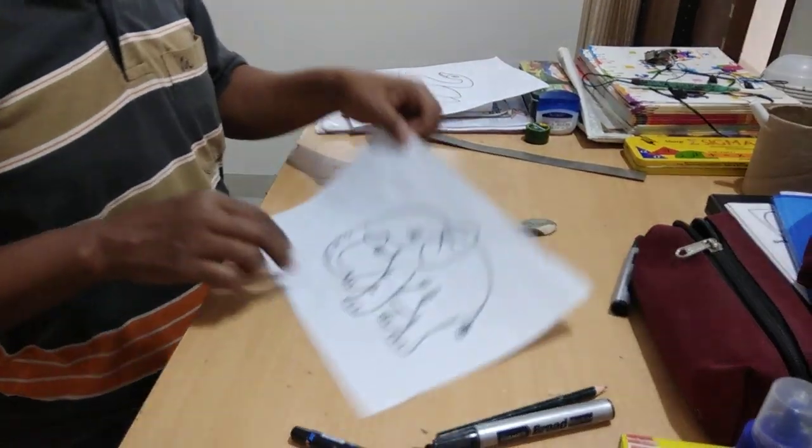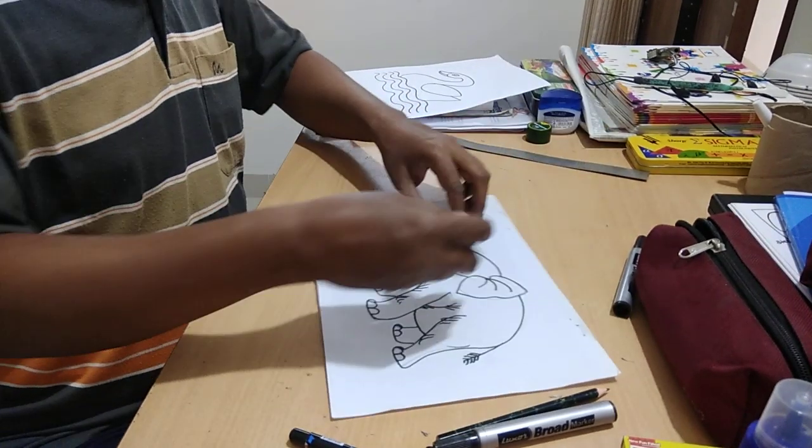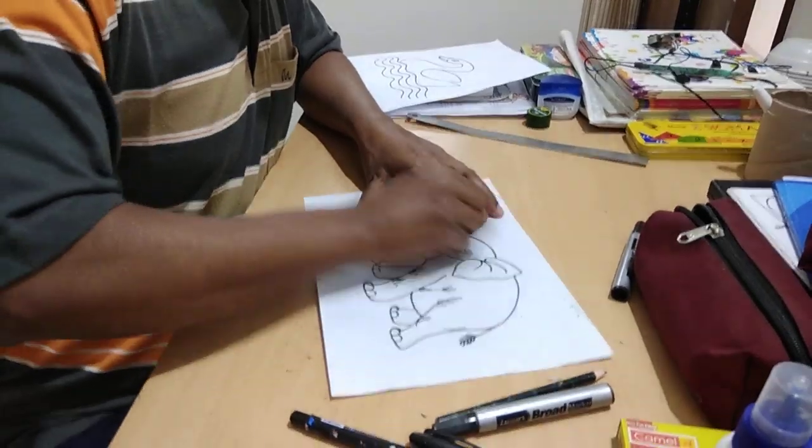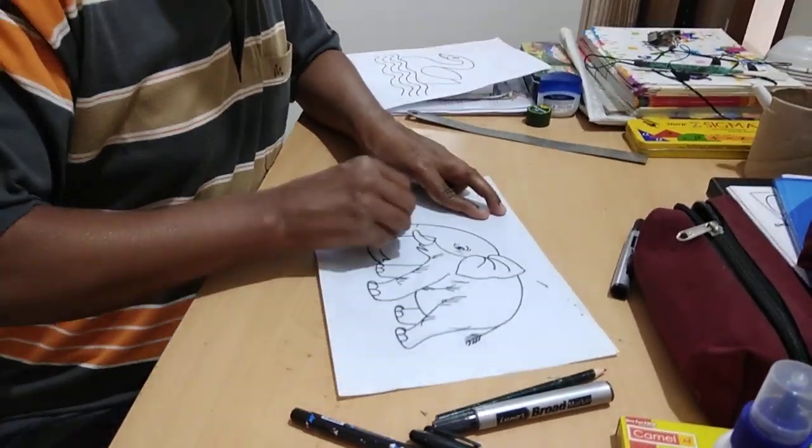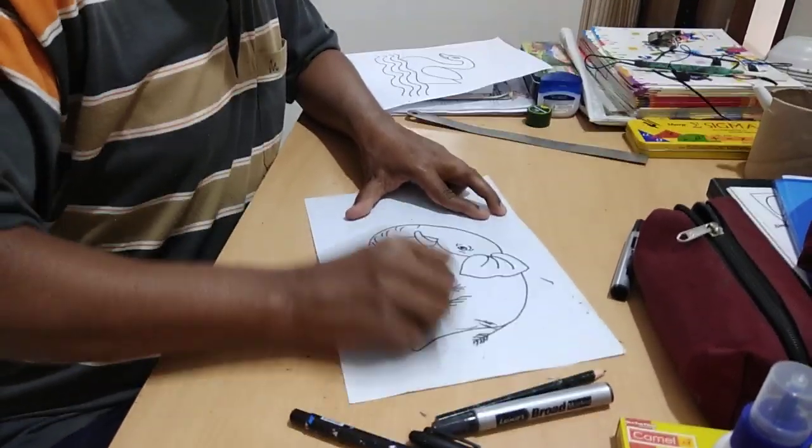So now this is like that, and after this you have to erase. All the unnecessary pencil lines should be erased.